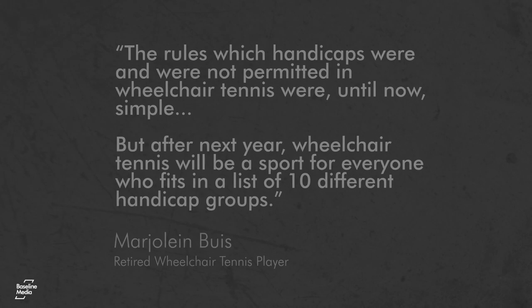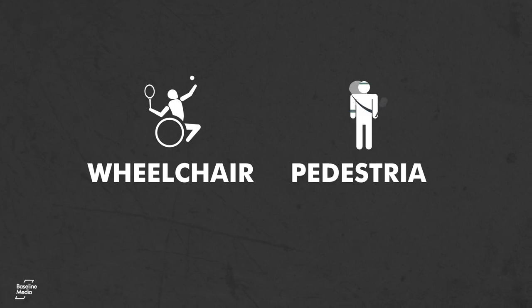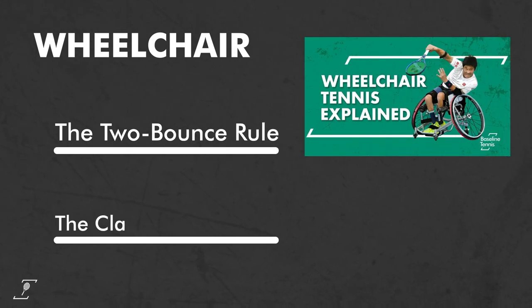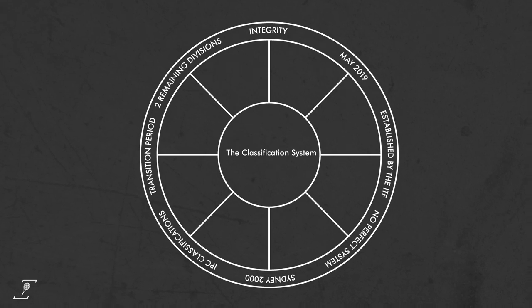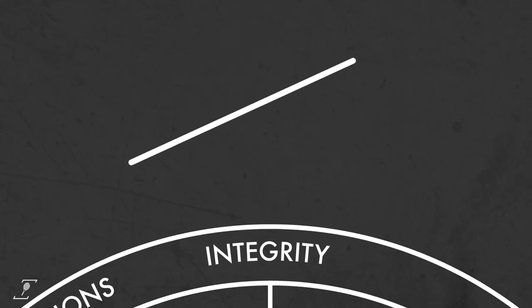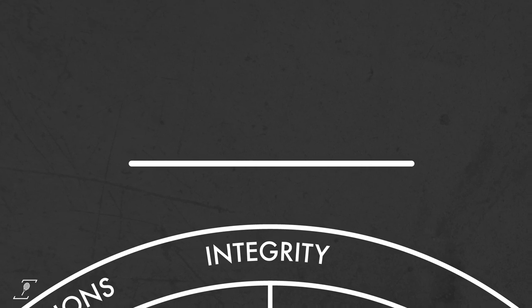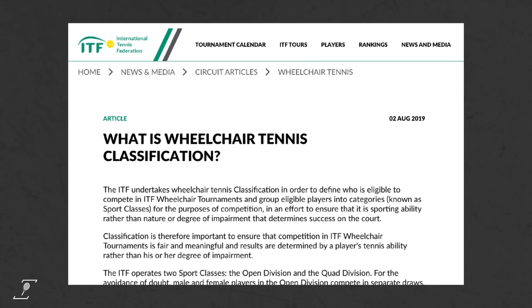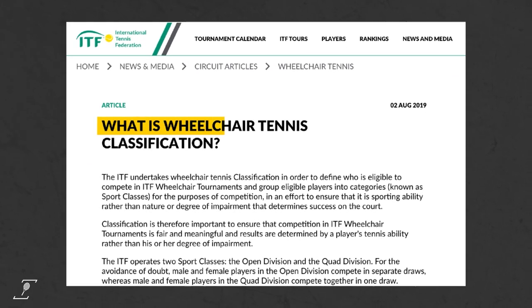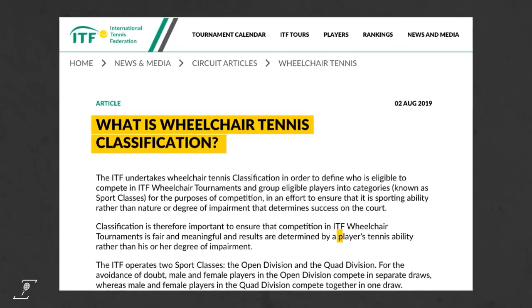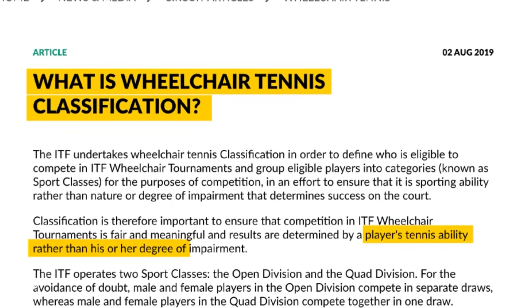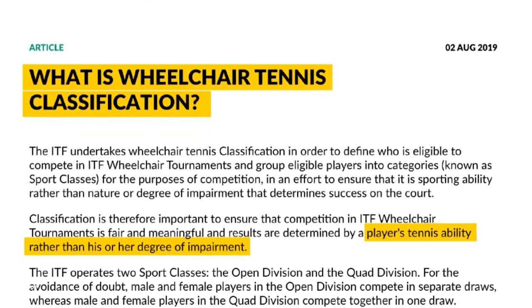When it comes to comparisons between wheelchair tennis and the pedestrian form of the sport, there are really only two major differences. The first, the two-bounce rule, we've talked about before. The second and perhaps less understood difference is the classification system. Designed to maintain integrity of competition and ensure a level playing field, wheelchair tennis, like all para sports, has an international classification system in place. It's important that the right system is created so competition is determined by sporting ability rather than a player's degree of impairment.